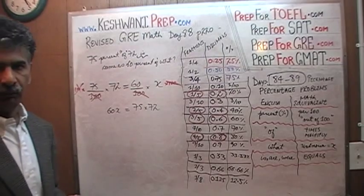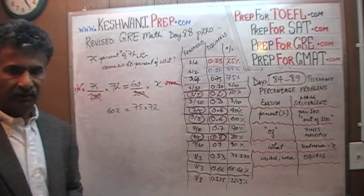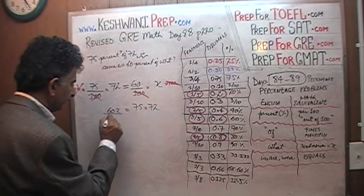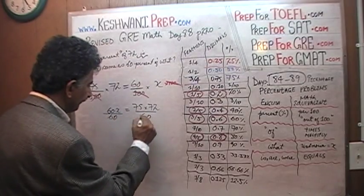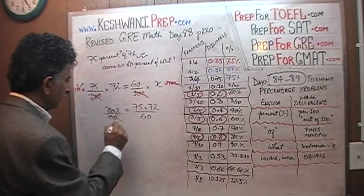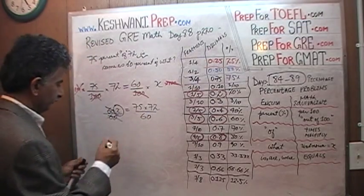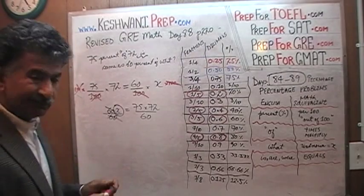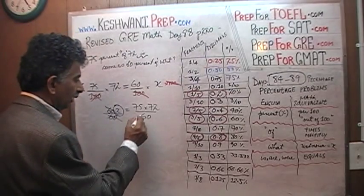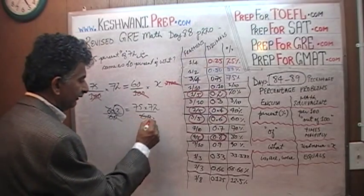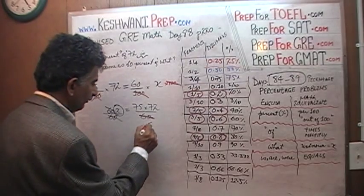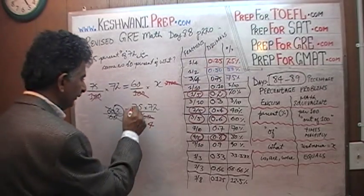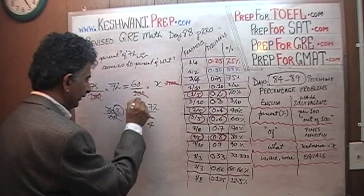60x equals 75 times 72. I brought 75 times 72 to the right-hand side — that's the convention: always keep your unknown on the left-hand side. Now let's divide both sides by 60. That gets rid of the 60, and we are left with only x. All we have to do is simplify. How many 15s in 60? 60 has four 15s. How many 15s in 75? It has five 15s.